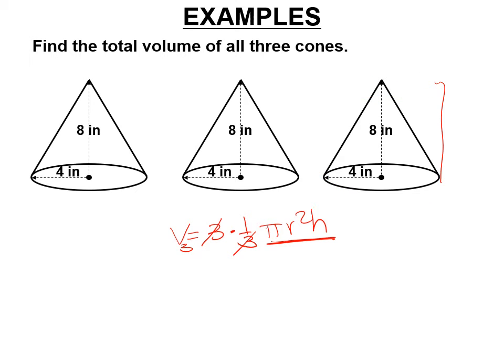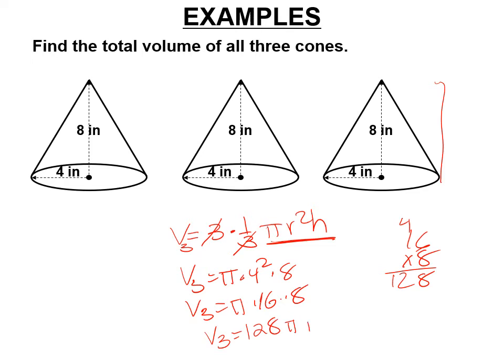I'm going to leave pi in the answer and get it exactly. The radius here is 4. 4 squared is 16. And then we have to do 16 times the height, which is 8. So 16 times 8. 6 times 8 is 48. 8 plus 4 is 12. So the volume of all three of them is 128 pi cubic inches.